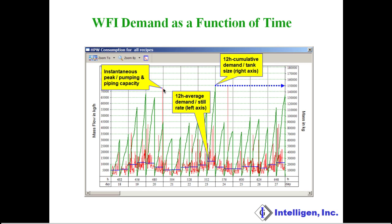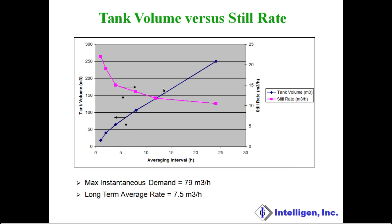Let's have a look at this graphically in order to understand that a bit better. This slide displays the trade-off between tank size and still capacity. The point where the two lines cross corresponds to the base case chosen here. The blue line represents the tank size on the left-hand y-axis, and the magenta line represents the still rate on the right-hand y-axis. As we reduce the averaging interval, the tank size goes down and the still rate goes up. This is equivalent to having smaller surge capacity, which in return requires larger still capacity. On the other hand, if we increase the averaging interval, we also increase our tank size but reduce our still rate. The solution you choose should be feasible in terms of equipment capacity and space available in your facility.